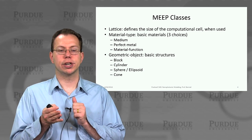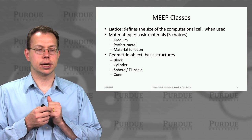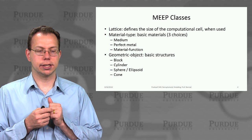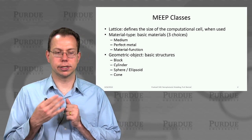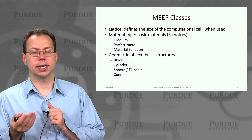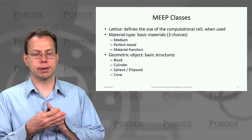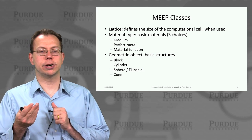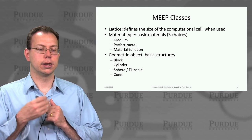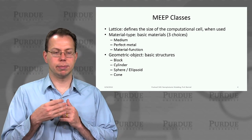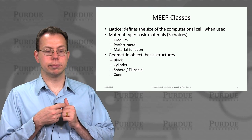MEEP also has materials. To a first approximation there are three types. One is a medium, which can be very complex or simple — maybe just a fixed dielectric constant, or it could have some dispersion. The second material type is a perfect metal, which reflects everything that comes at it. The third is the material function, which may be some arbitrary position-dependent superposition of ordinary media.